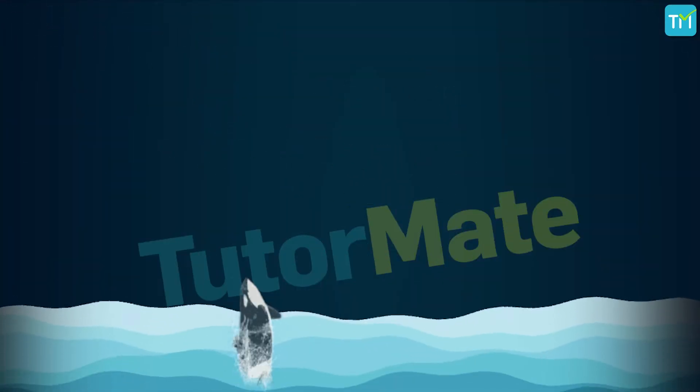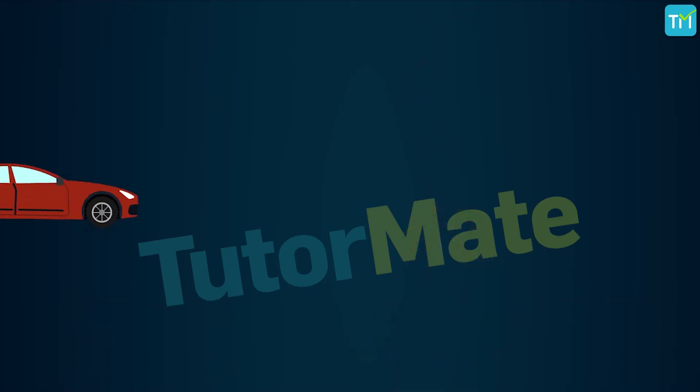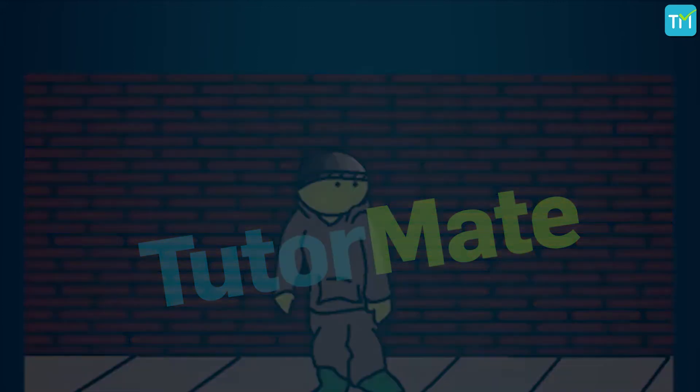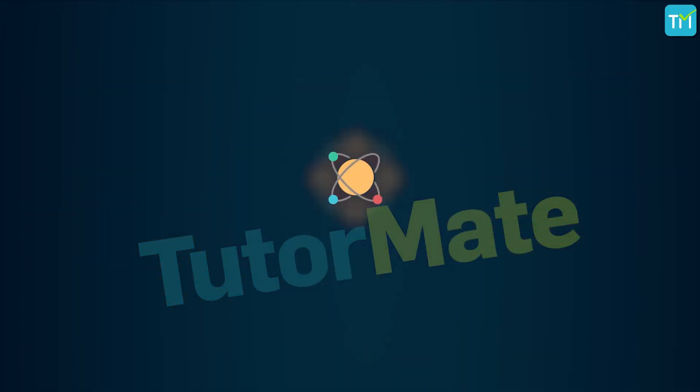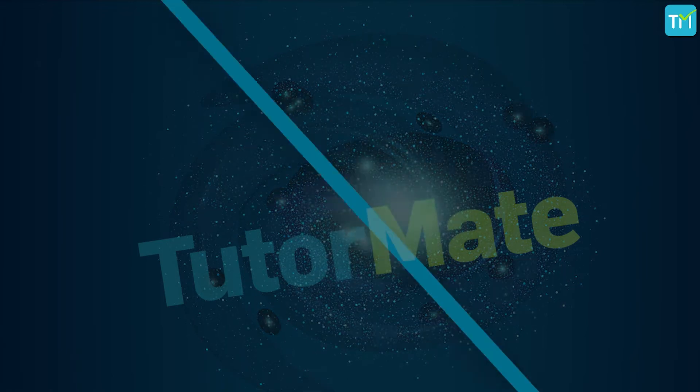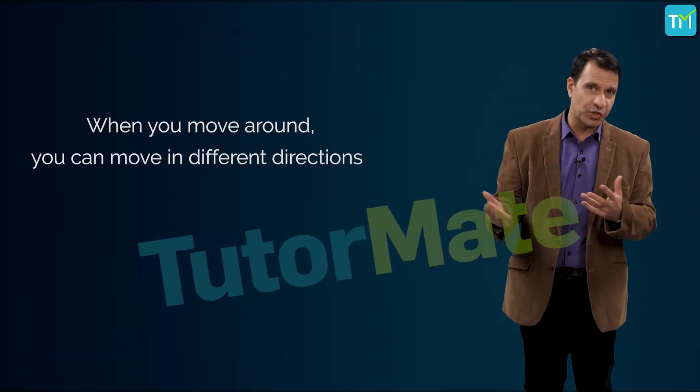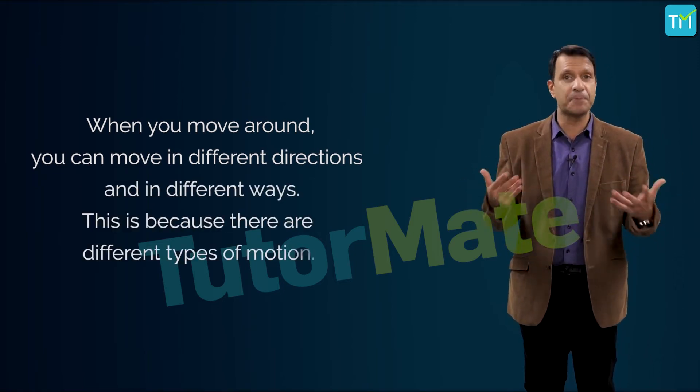Birds fly, fish swim, blood flows through veins and arteries, cars move, you jump over gates and walls when you reach home late, the earth spins on its axis, atoms, molecules, planets, stars, galaxies. They are all in motion. Now, when you move around, you can move in different directions and in different ways. This is because there are different types of motion.